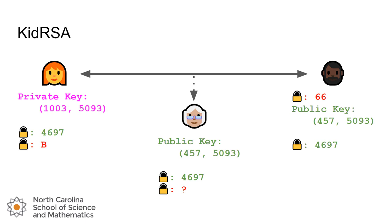Eve can't recreate that because she doesn't have 1,003, and it's pretty hard for her to figure that out. Remember, d and e are multiplicative inverses, which means she would need to try all the numbers between 0 and 5,093 to figure out which value is the multiplicative inverse of 457. That's a lot of choices — if we choose a, b, a-prime, b-prime to be very large, then n will be very large and it will take a tremendous amount of time to try all possible values of d, even for a computer.